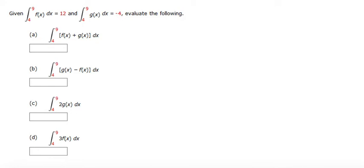For part a, we can take f of x and g of x and split that up into two integrals. The integral from 4 to 9 of f of x dx, plus the integral from 4 to 9 of g of x dx.